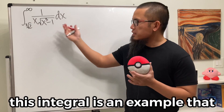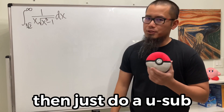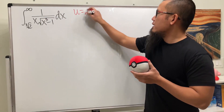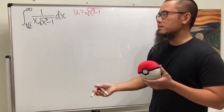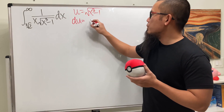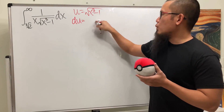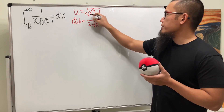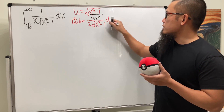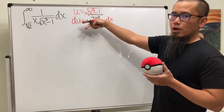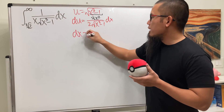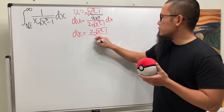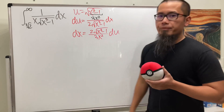Dear calculus students, this integral is an example where if you don't know what to do, just go ahead and do a u-substitution. We let u equal the square root part — that is, u = √(x³ - 1). Differentiating both sides, du equals 1/2 times that, then by the chain rule multiplied by the derivative inside, which is 3x², times dx. Multiplying the reciprocal on both sides gives us dx = 2√(x³ - 1) / (3x²) du.